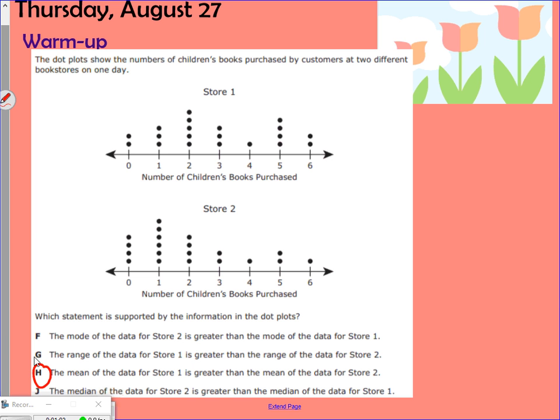The mean of the data for store one is greater than the mean for store two. I'm going to show you how to calculate that. The mean means I'm going to add up all of the data points in the dot plots. Now be careful. Let's look at store one. Each of these dots represents one person saying that they bought that many books. If I were to list these out, it would be zero, zero, and then one, one, one, two, two, two. So each dot, you have to be careful. Don't just count this as three people. You're counting the number of books, not just the people who bought it.